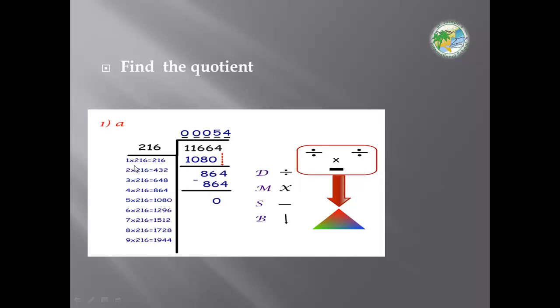Look at your draft. Here we have 864. So up 4 and down 864. Subtraction equals 0.